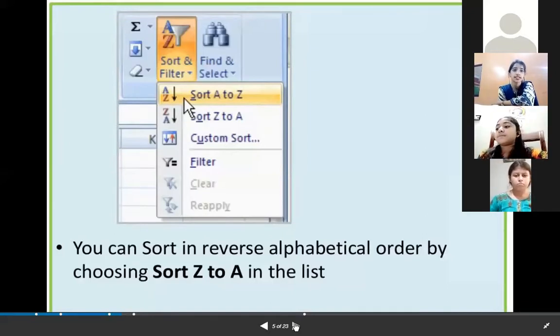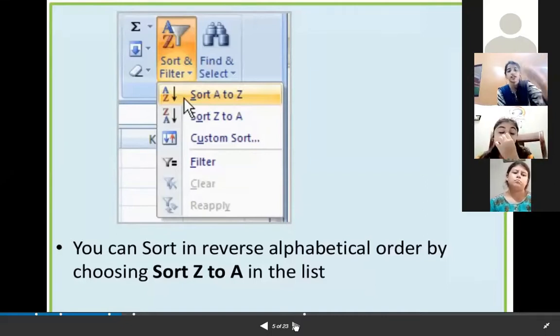If we are going to choose the second option, Sort Z to A, the data would be arranged in descending order. The name starting with the letter B would be at the top of the list, and those starting with A would be at the end of the list.